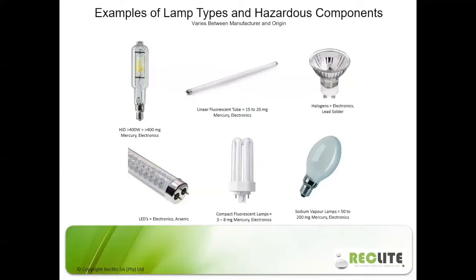Further to the right, as everyone would know, is the common linear fluorescent tube, which contains mercury vapor. Depending on the manufacturer and origin of where the lamp was made, it can vary between 15 to 20 milligrams of mercury, and it also has some small electronics in the end caps.